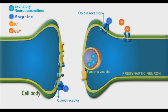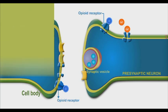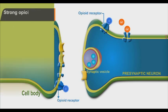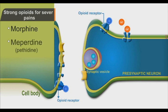Opioids are usually classified into three major groups: strong opioids for severe pain, such as morphine, meperidine — also called pethidine — and fentanyl.